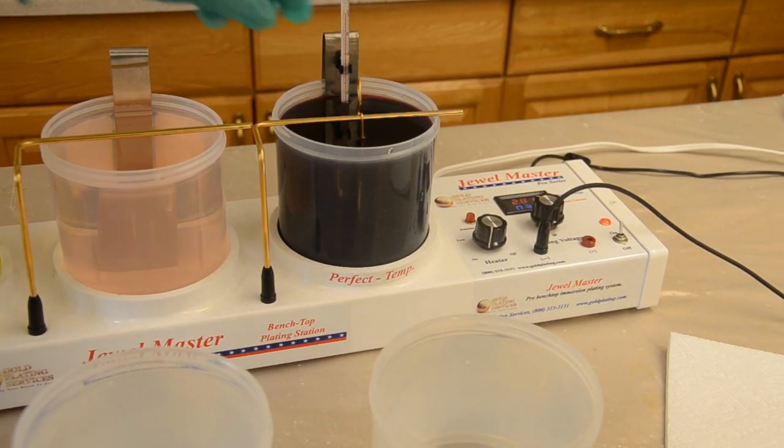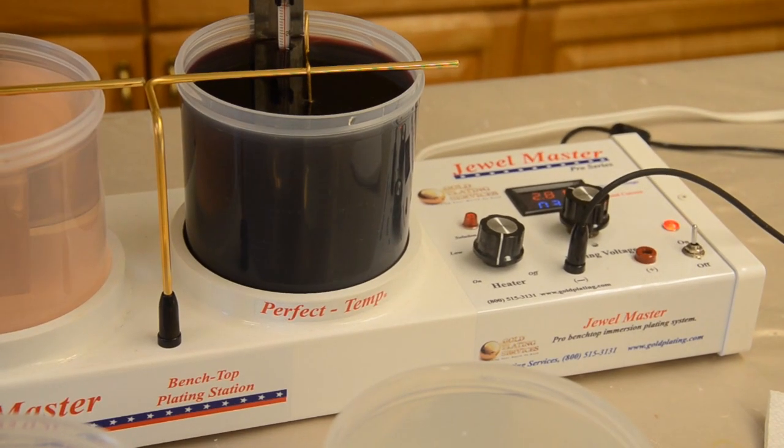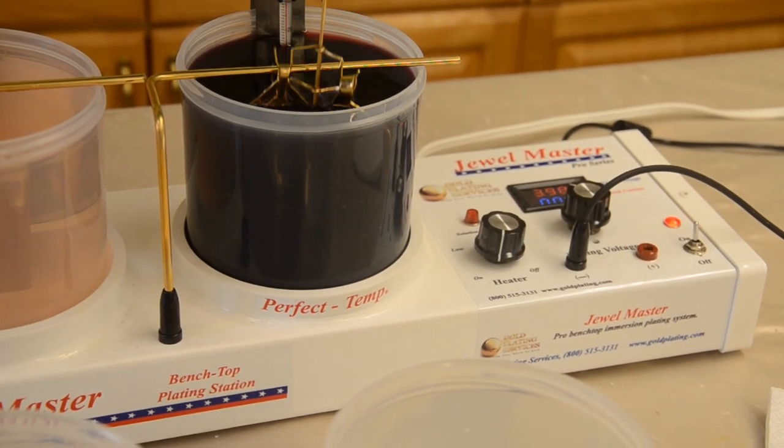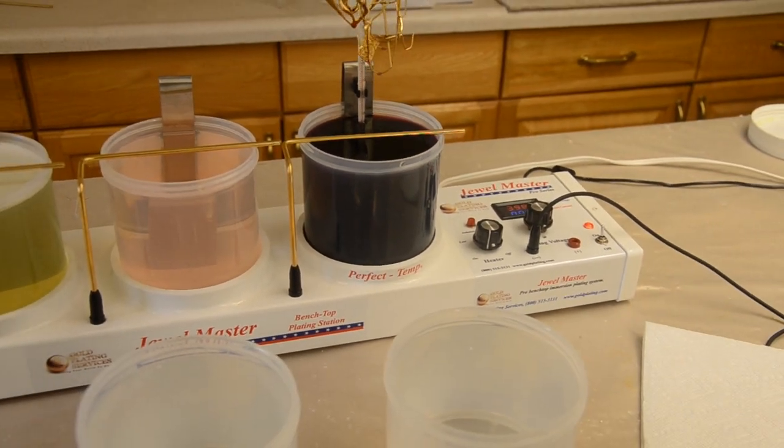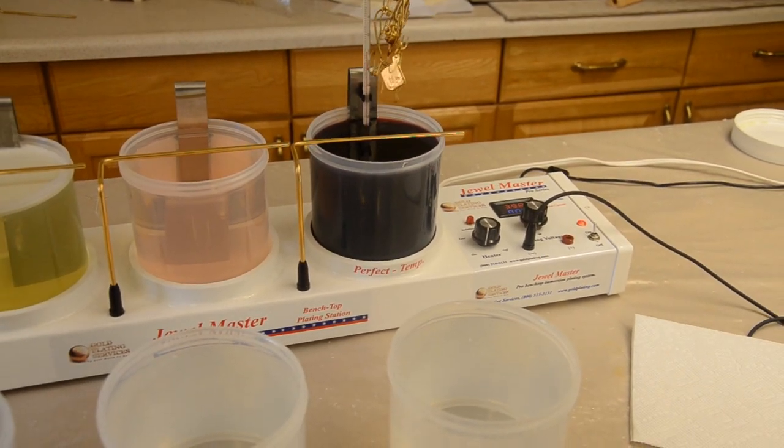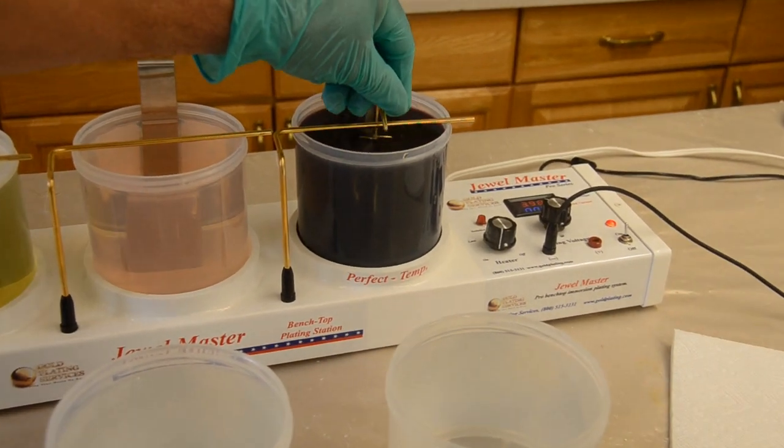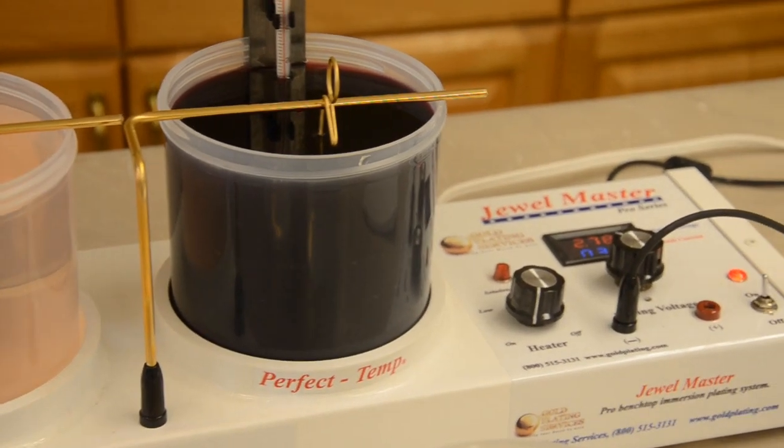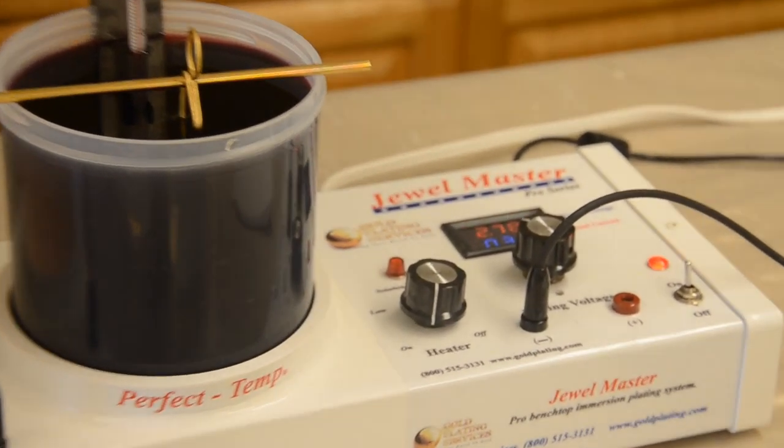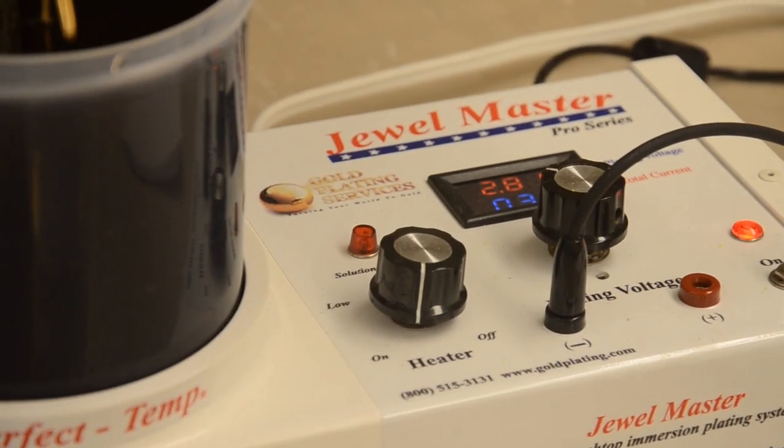It's been about a minute and a half so what I'm going to do is take the parts out, you can see it looks like everything's plated good, I want to increase the thickness so I'm going to turn the rack around and hang it in there, we'll leave it for another minute and a half or two minutes, something like that, just so I get a good heavy coat. But you can plate twice as long and get twice the thickness.